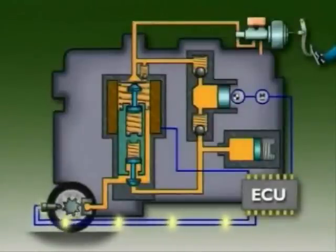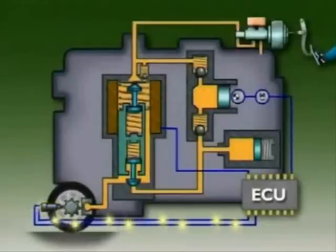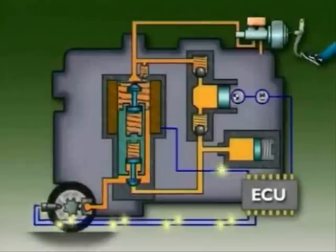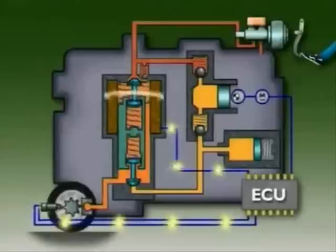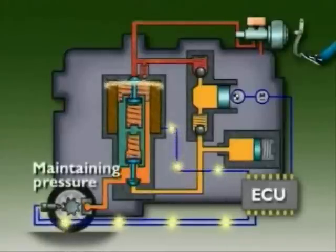When the control unit detects any lock up tendency, perhaps from too rapid wheel deceleration, it sends a command current to the solenoid coil. This causes the armature and valve to move upward and isolate the brake circuit from the master cylinder.